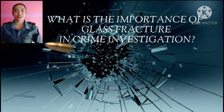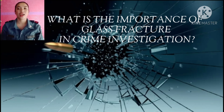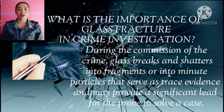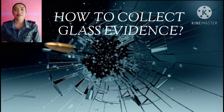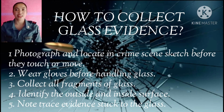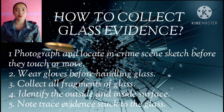What is the importance of glass fracture in crime investigation? During the commission of a crime, glass breaks and shatters into fragments or minute particles that serve as trace evidence and may provide a significant lead to solve a case. To collect glass evidence: first, photograph and locate it in the crime scene sketch before touching or moving anything. Wear gloves before handling glass, and collect all fragments. Use rubber-tip tweezers or tape to collect small fragments.